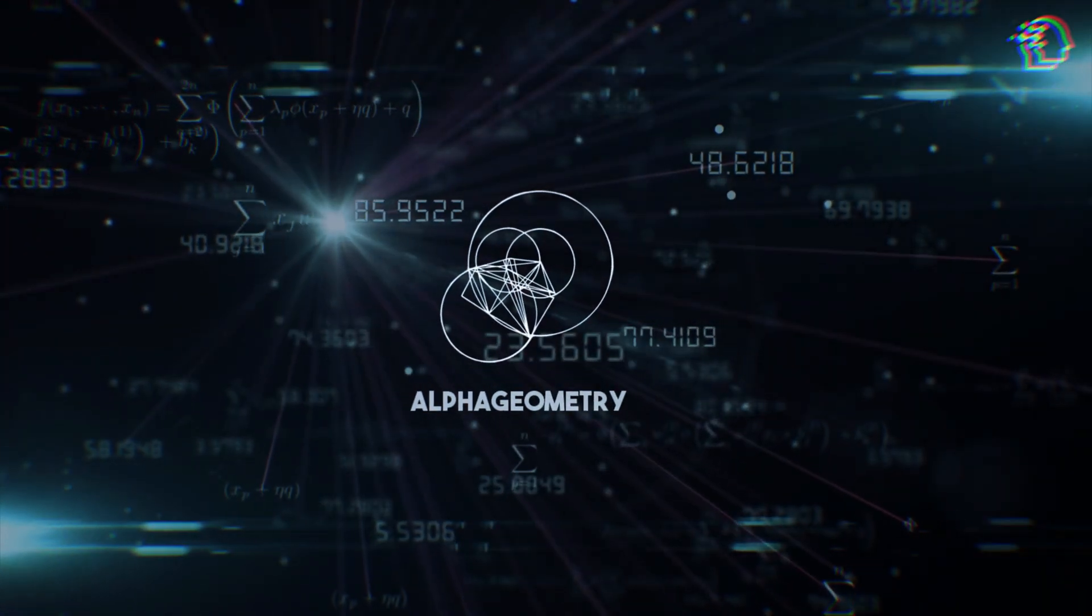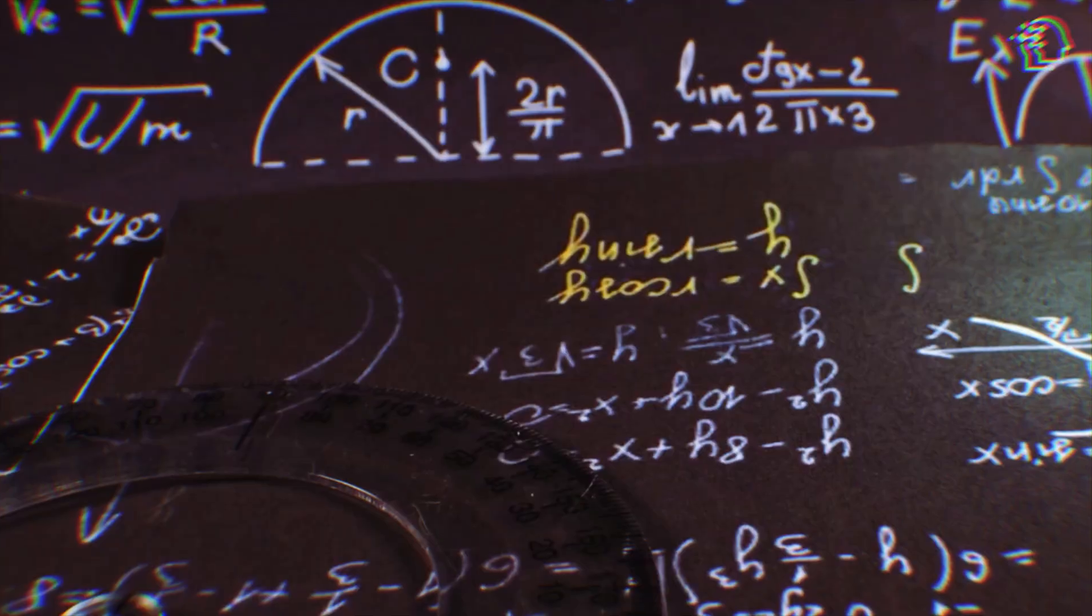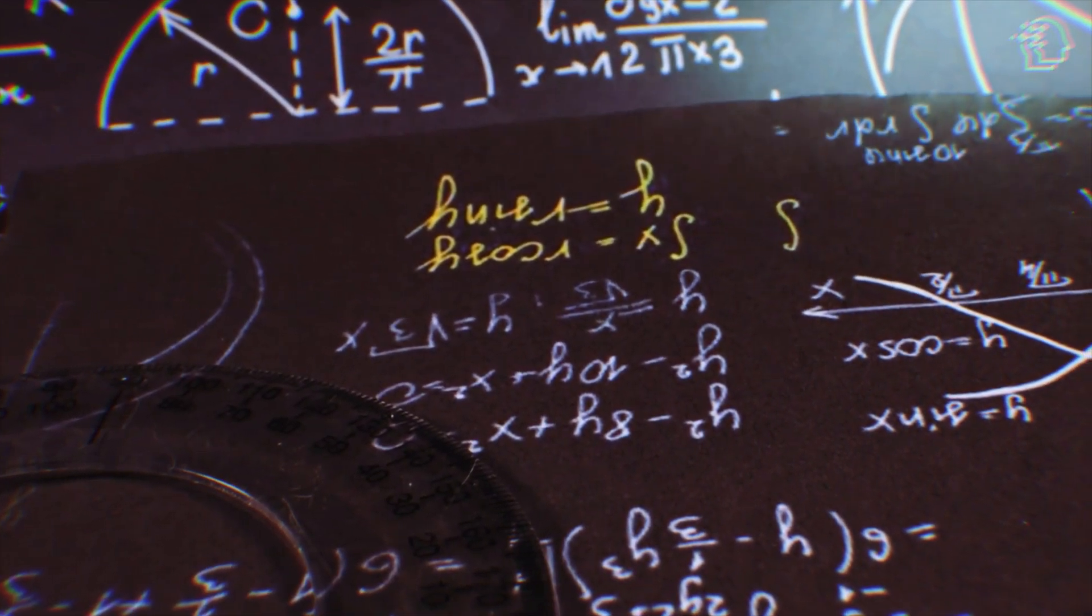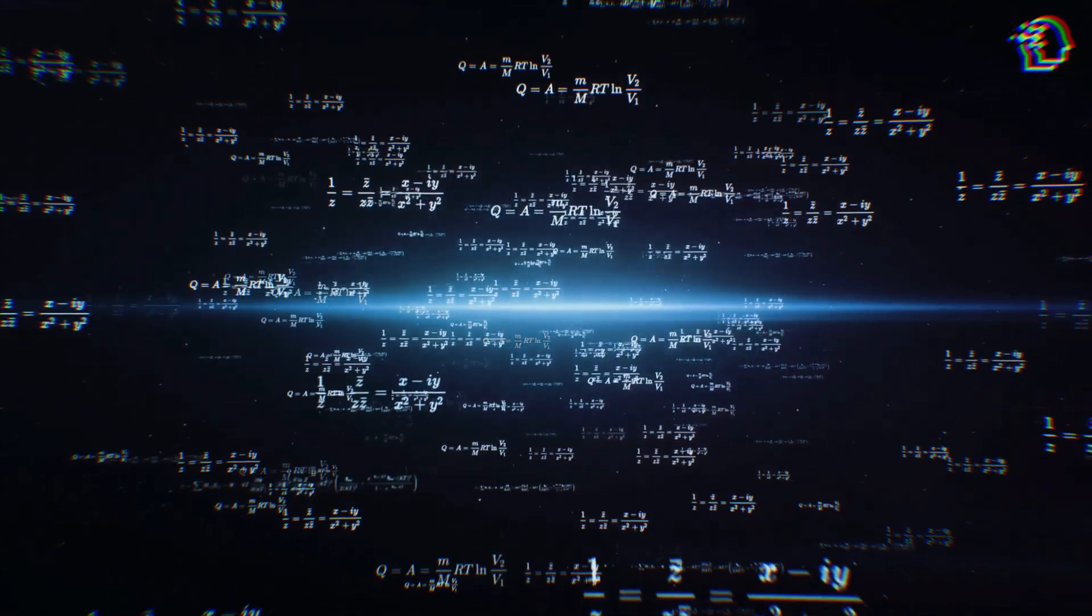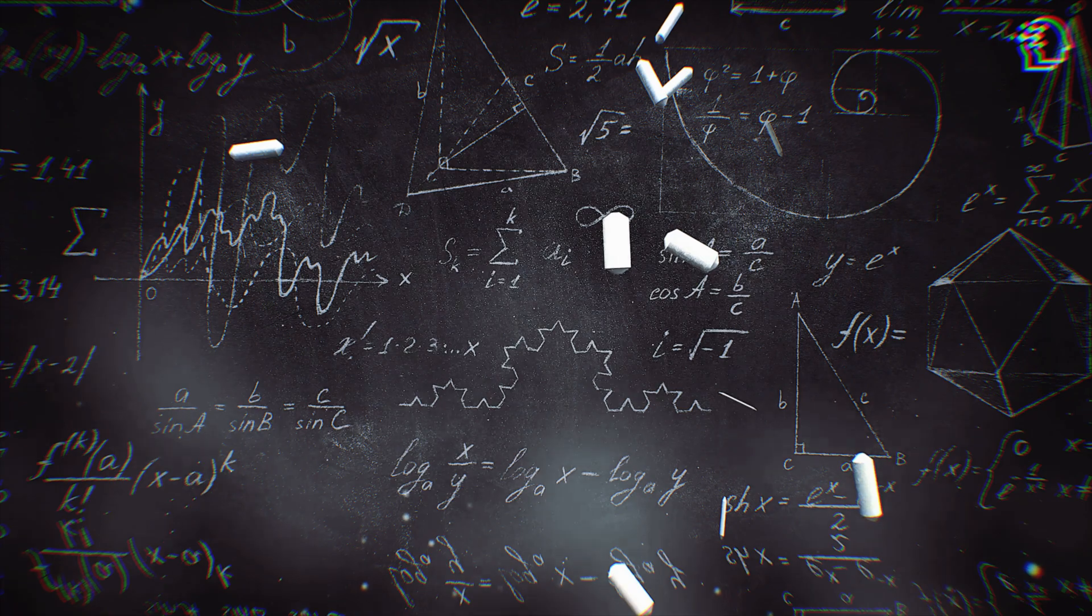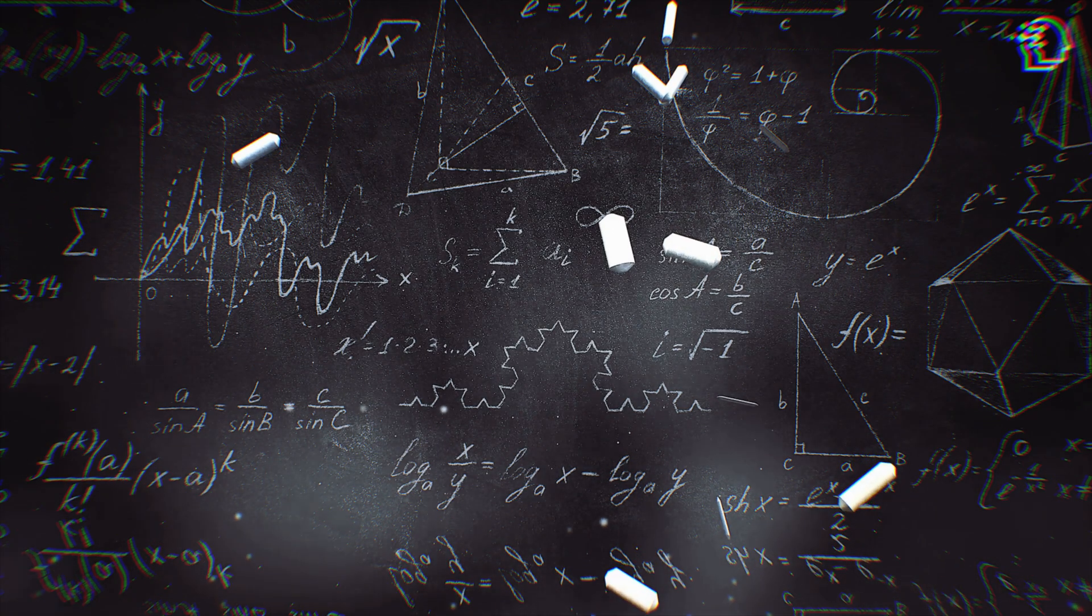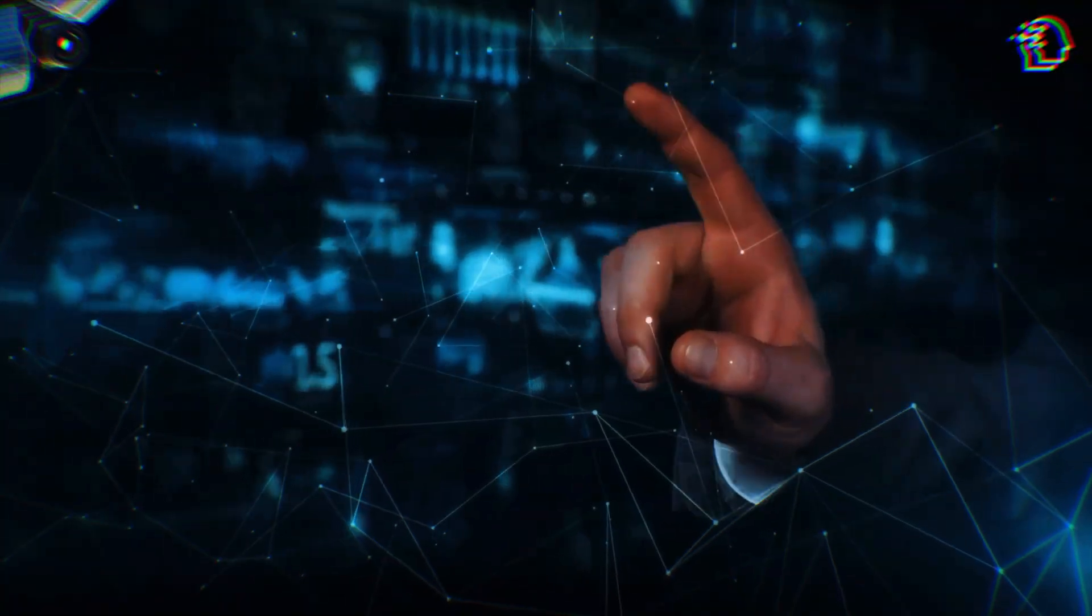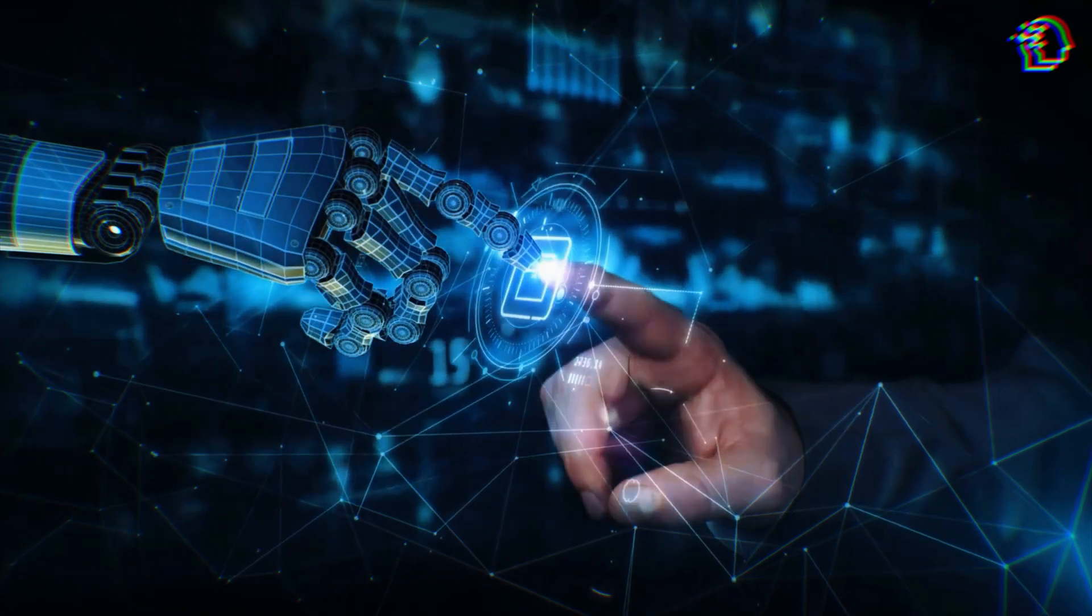AlphaGeometry is more than just an advanced AI model. It's a beacon of human creativity and technological prowess. It's showing us that complex geometry, once deemed unreachable for AI, is now a conquered territory. As we continue to witness the merging of AI with complex problem-solving, we step into a future where the possibilities are limitless.